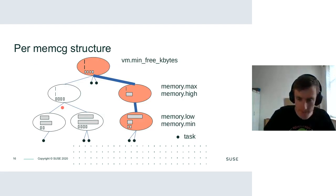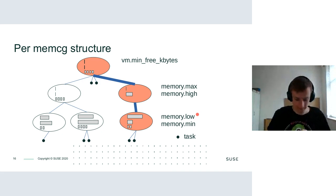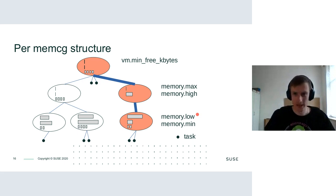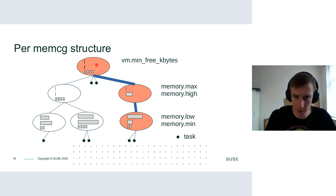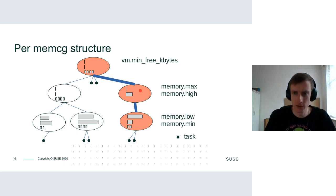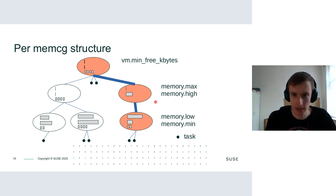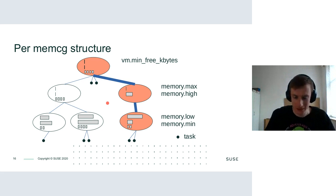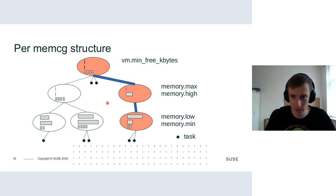Now I've introduced memory.low and memory.min attributes. That's also why I was repeating the importance of iteration — that's actually where the protection takes place. Even if the target cgroup is the root cgroup and we iterate through the descendants, we check what their current memory consumption is and compare it with the memory.low value. If it's below the protection value we simply skip it in the reclaim and go check other descendants. This is basically the core of how the protection works.